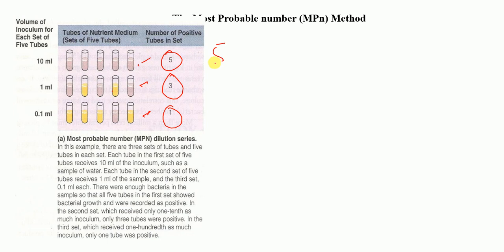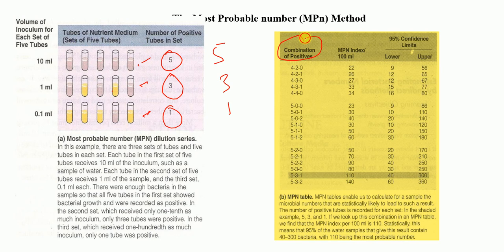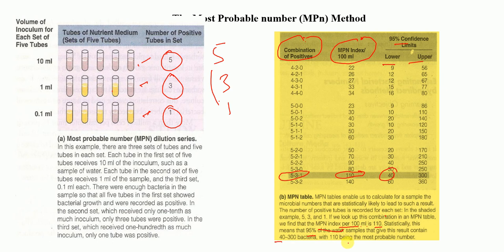We then look up the combination 5, 3, 1 in the most probable number table. This table contains the combination of positives, the most probable number index per 100 ml, and 95% confidence limits. For the combination 5, 3, 1, the most probable number index per 100 ml is 110. That means 110 is the most probable number of bacteria, the lower limit is 40, and the higher limit is 300. Statistically, this means 95% of samples giving this result contain 40 to 300 bacteria, with 110 being the most probable number.